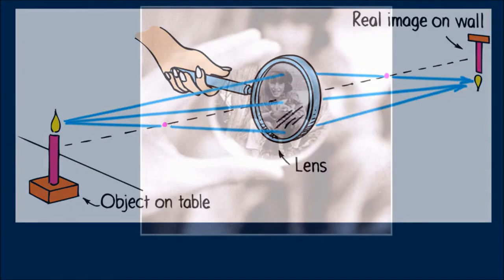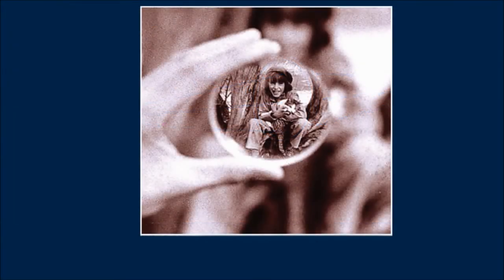A diverging lens, on the other hand, used alone produces a reduced virtual image. It makes no difference how far or how near the object is. When a diverging lens is used alone, the image is always virtual, right-side-up and smaller than the object.